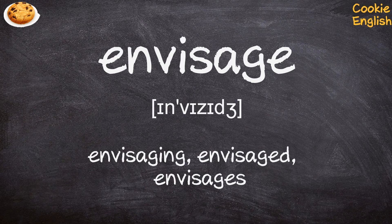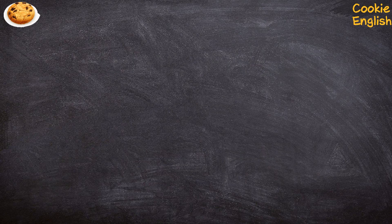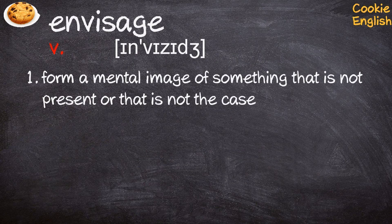Envisage. Envisaging, envisaged, envisages. Verb. 1. Form a mental image of something that is not present or that is not the case.